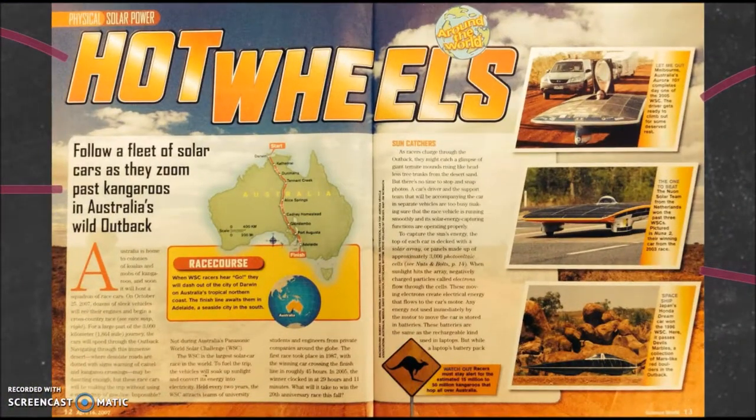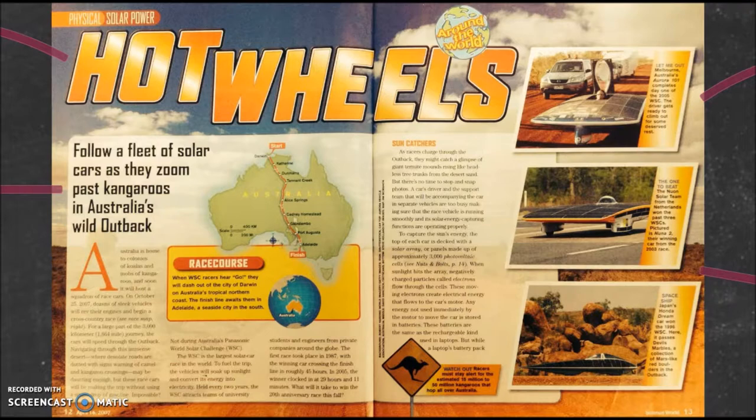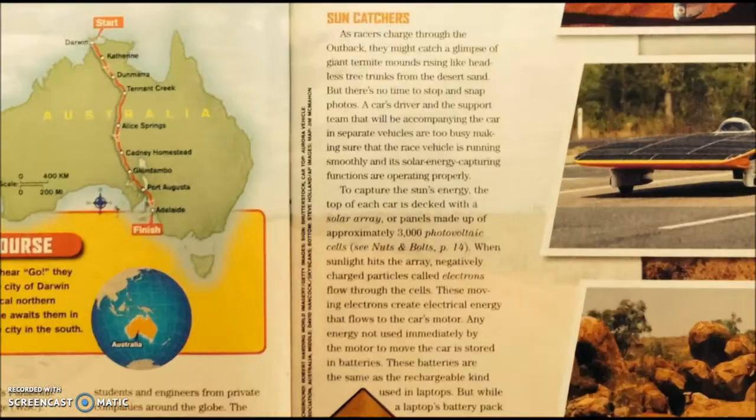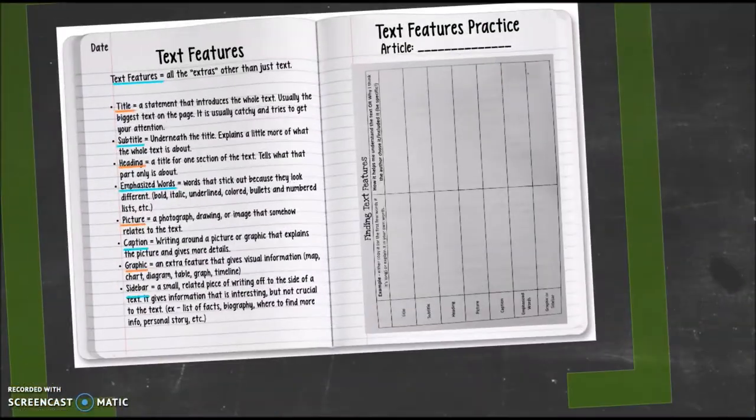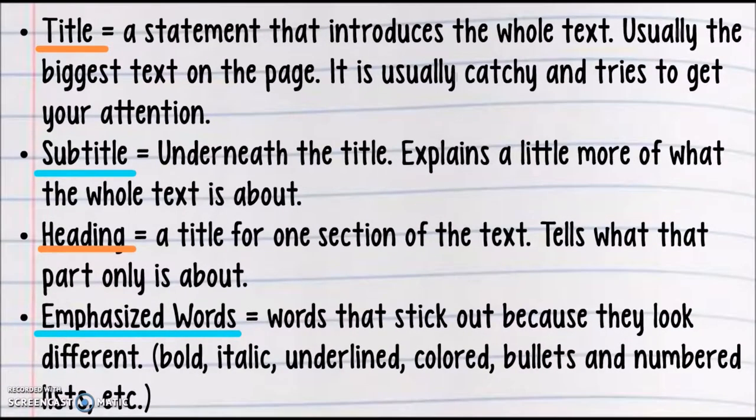So now let's look at our next bit of text features. What do we have? What is that? What is that called right there? Besides being really close, emphasize words. Words that stick out because they look different. Either they're going to be bold, italic, underlined, colored, bullets, numbers, lists, etc. These are called emphasize words. To emphasize. See what I'm doing with my voice here? Emphasize. It sticks out when I say emphasize words. Definition. Write it.